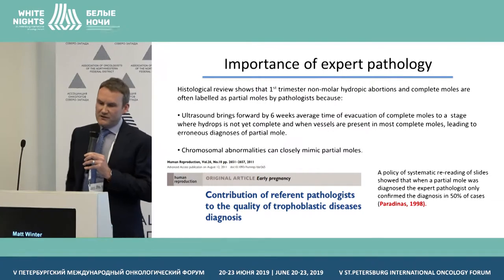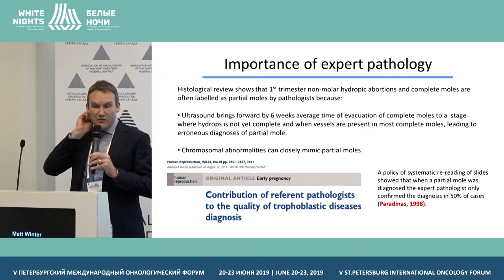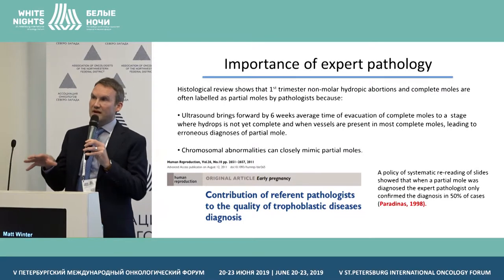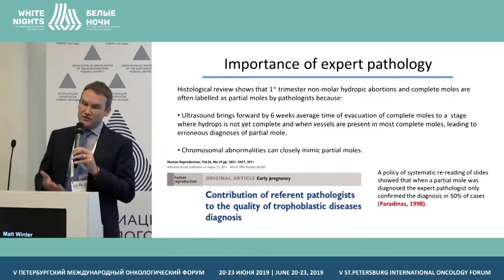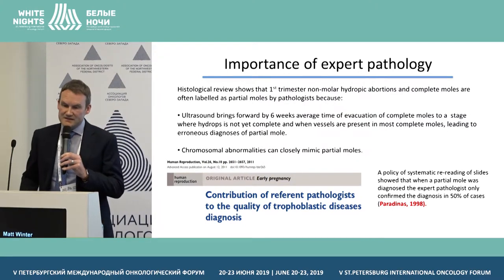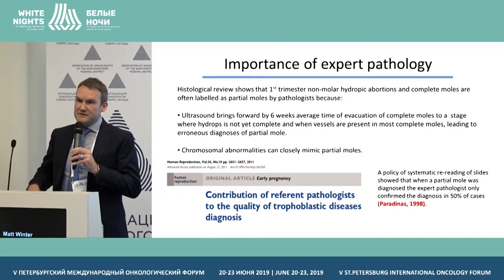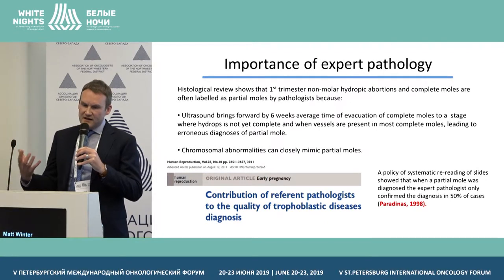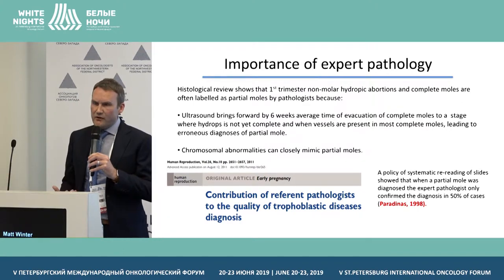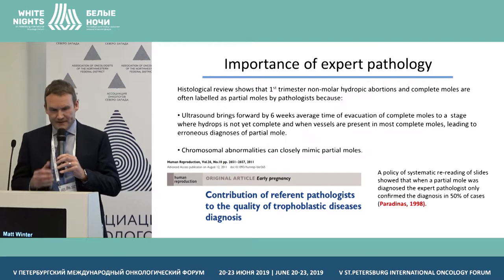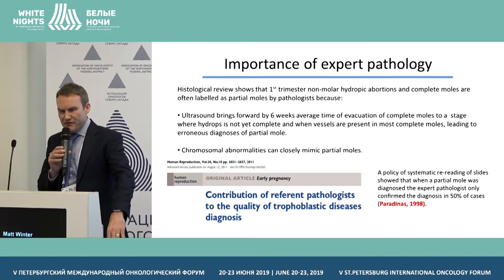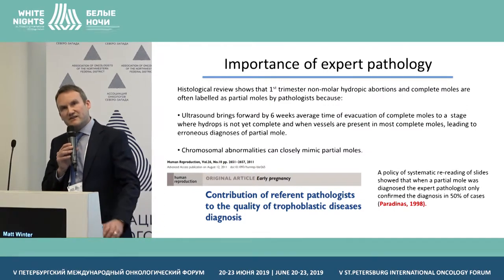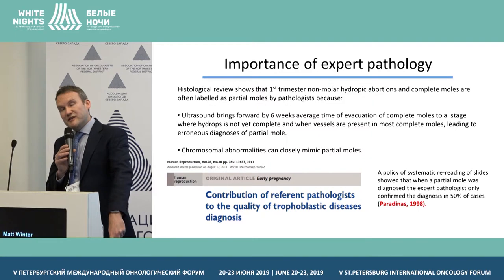This shows the importance of expert pathological review. On review of first trimester non-molar hydropic abortions and complete moles, they are often labelled locally by pathologists as partial moles. This is because ultrasound is making the diagnosis of complete moles much earlier — the vacuolar appearance of the villi might not yet be complete, and blood vessels may still be present. Chromosomal abnormalities can also closely mimic partial moles. One article showed that when an expert pathologist looked at slides where a partial mole was diagnosed, they only confirmed that diagnosis in 50% of cases.